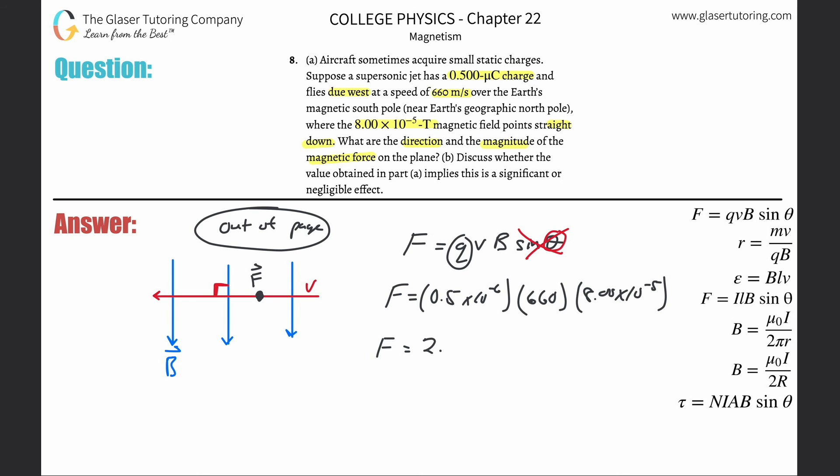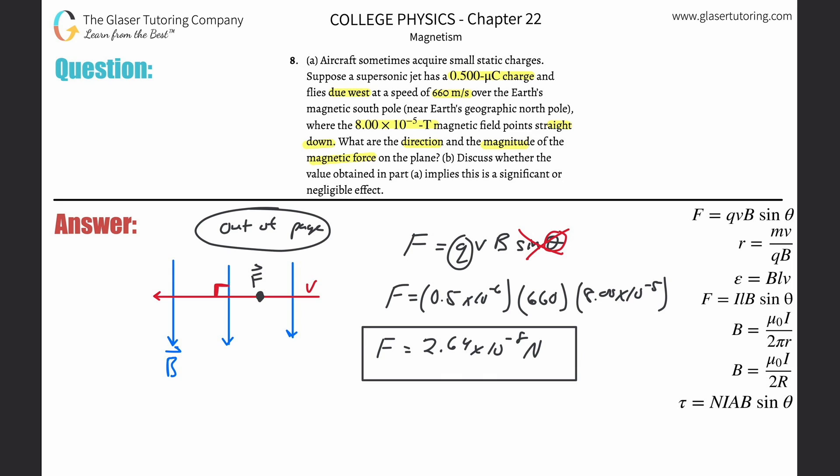The answer comes out to now 2.64 times 10 to the minus eight, and we're talking about force, so it's newtons. So that's it. And by the way, thinking about this direction, they might want it in terms of a cardinal direction, meaning like north, south, east, or west. So you kind of have to imagine the Earth surface is down here, and the velocity here is pointing to west.